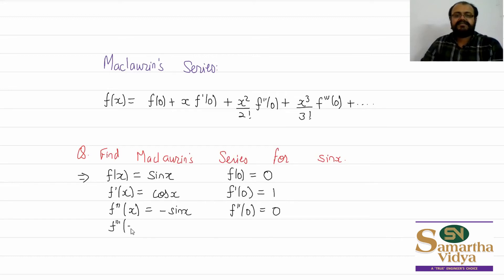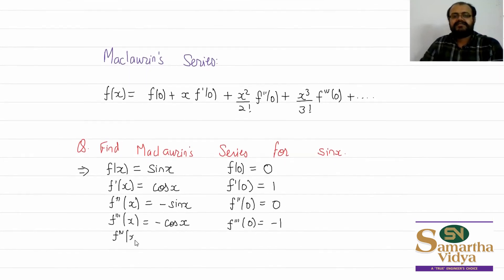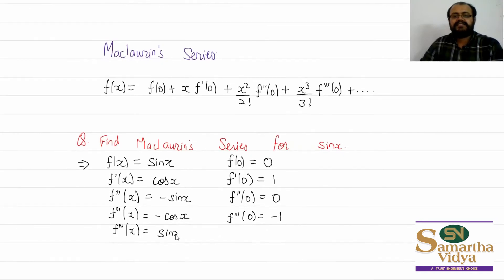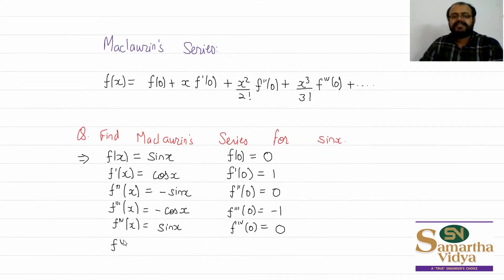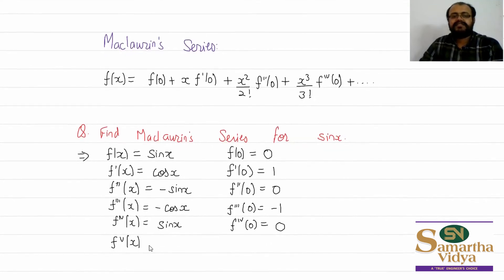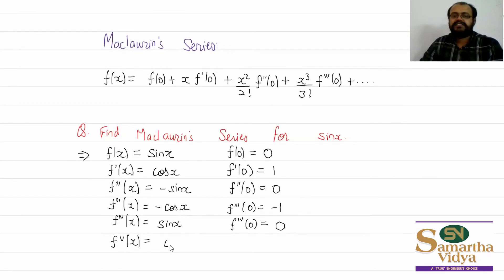The third derivative is −cos x, and the third derivative at x = 0 is −1. The fourth derivative returns to sin x, and the fourth derivative at x = 0 is 0. The fifth derivative is cos x, and the fifth derivative at x = 0 is 1.